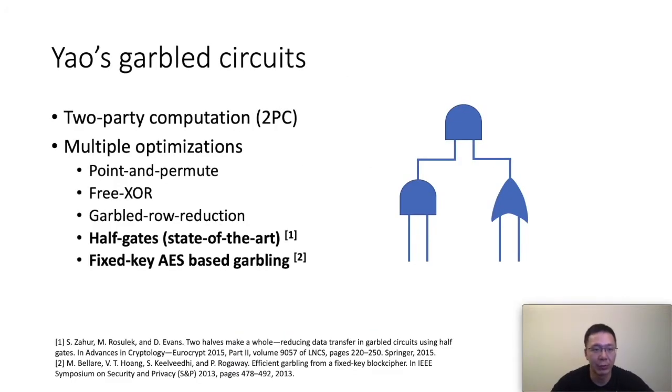First, let me review Yao's Garbled Circuits. The Yao's Garbled Circuits is a two-party computation protocol. It allows two parties to jointly compute a function without revealing anything beyond the output of that function. The Yao's Garbled Circuits represent a function as a boolean circuit with AND gates and XOR gates, and encrypt the computation gate by gate to maintain privacy. Over years, there are many optimizations for the garbled circuits, including point-and-permute, free XOR, and garbled row reduction.